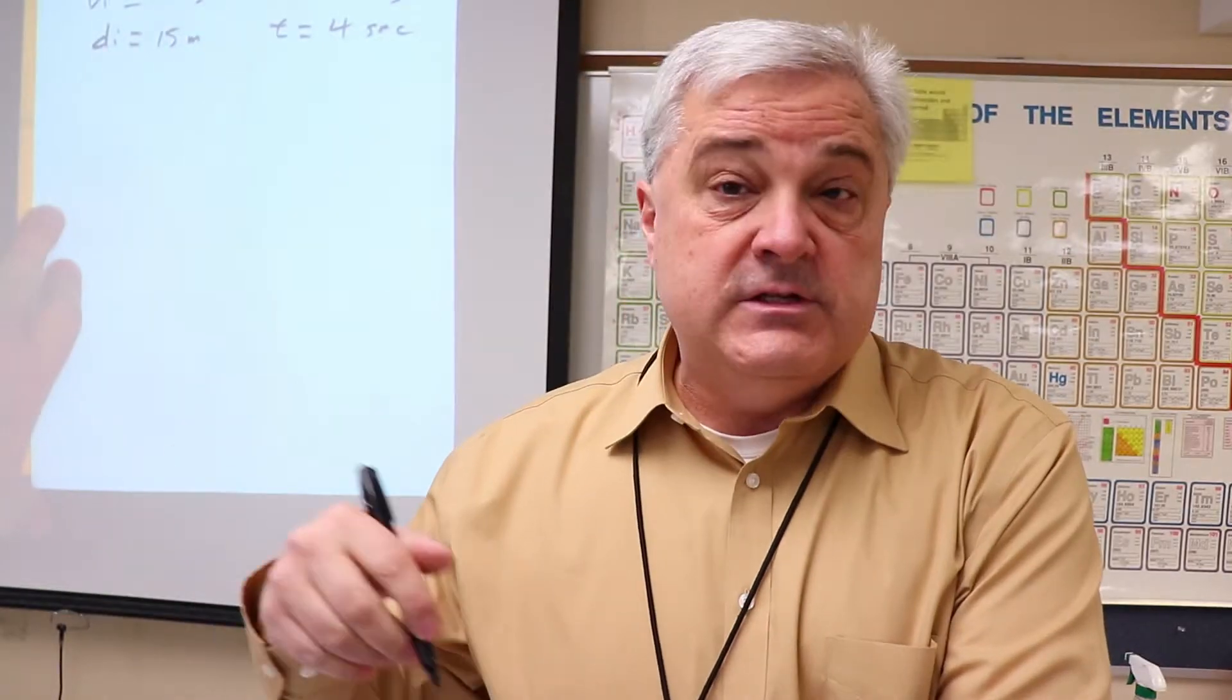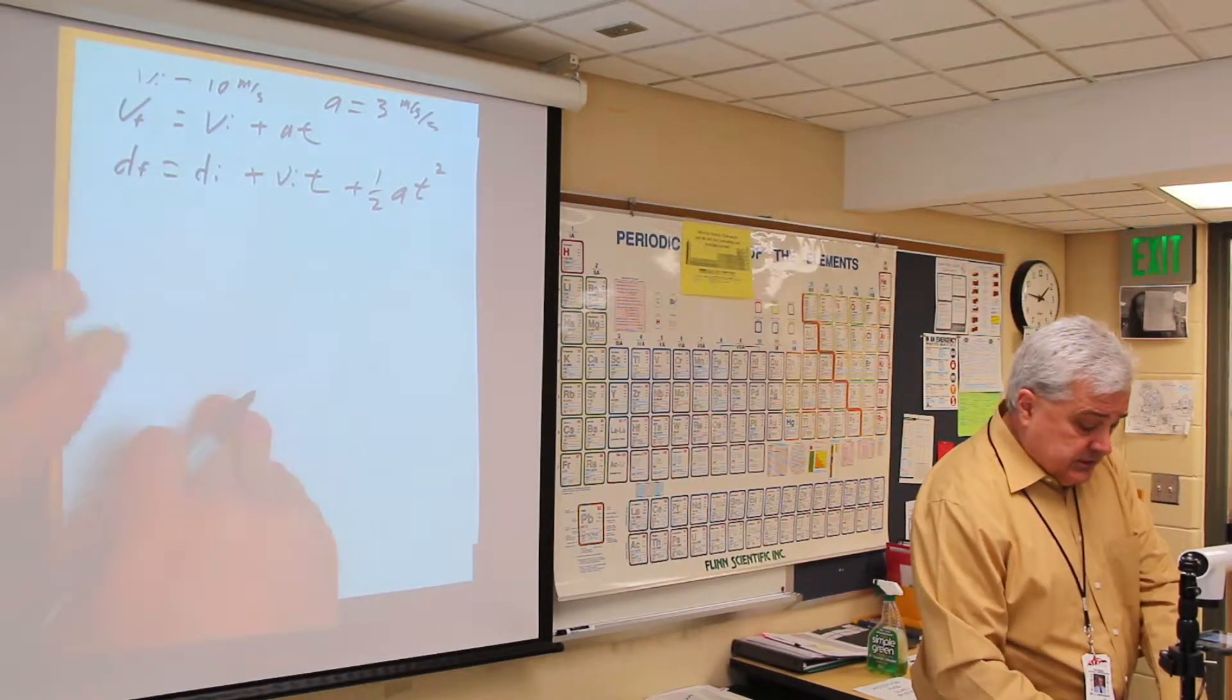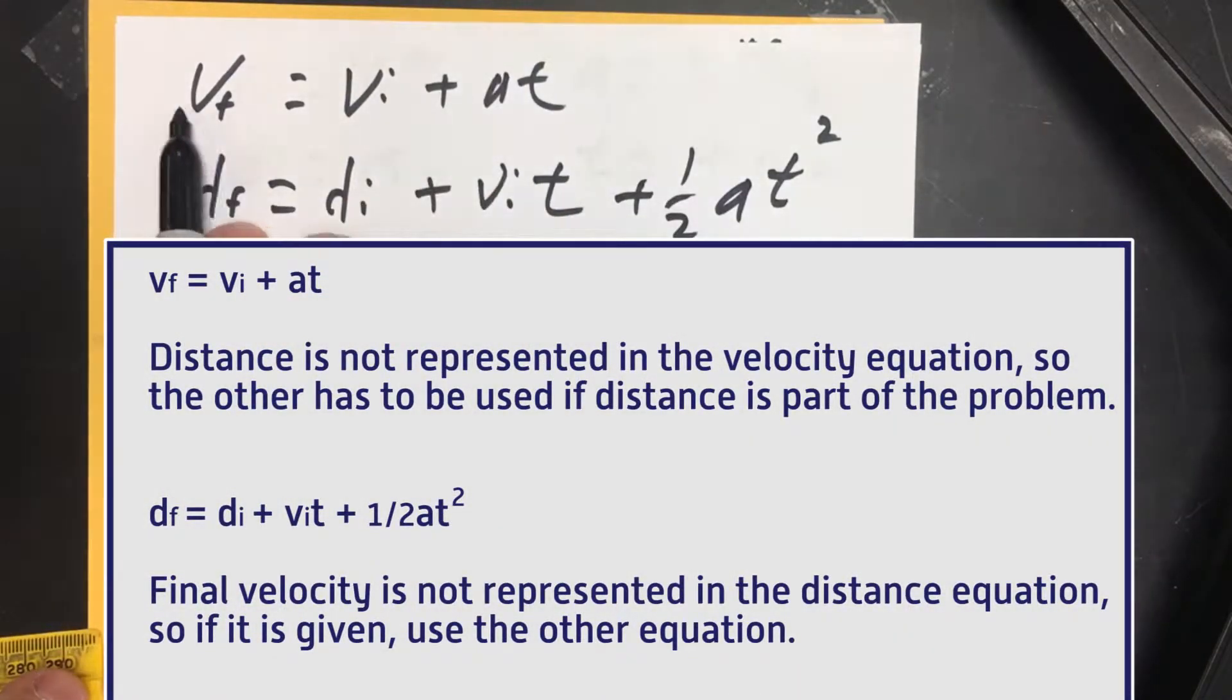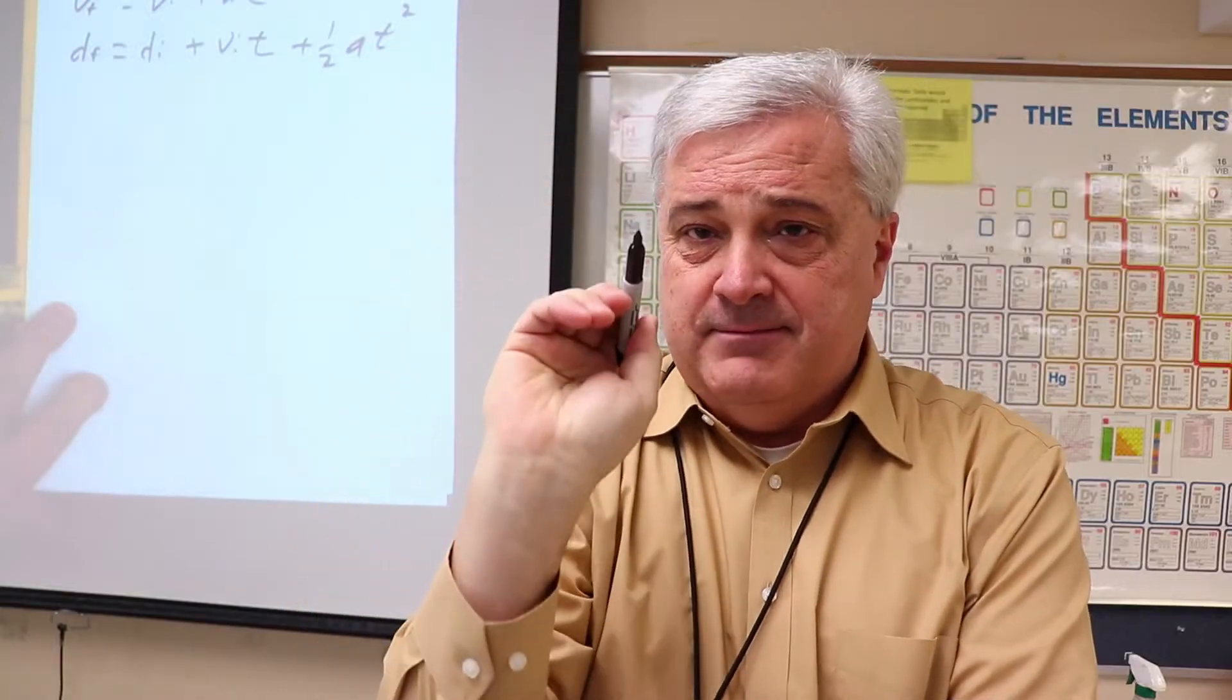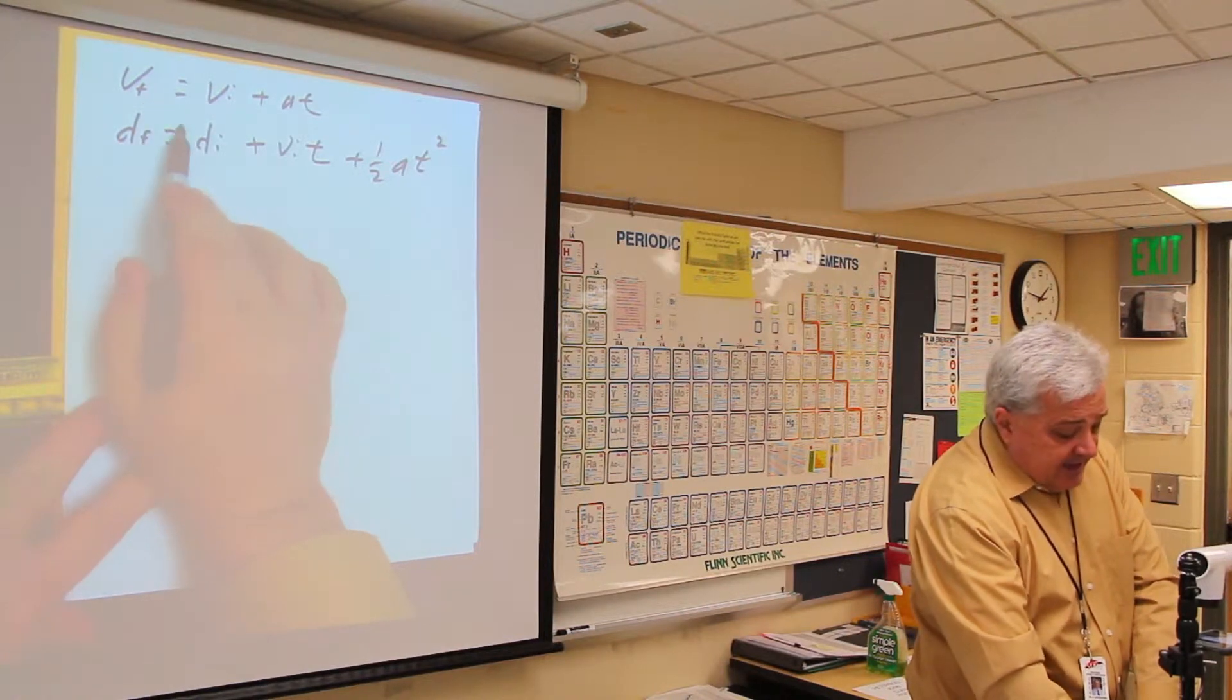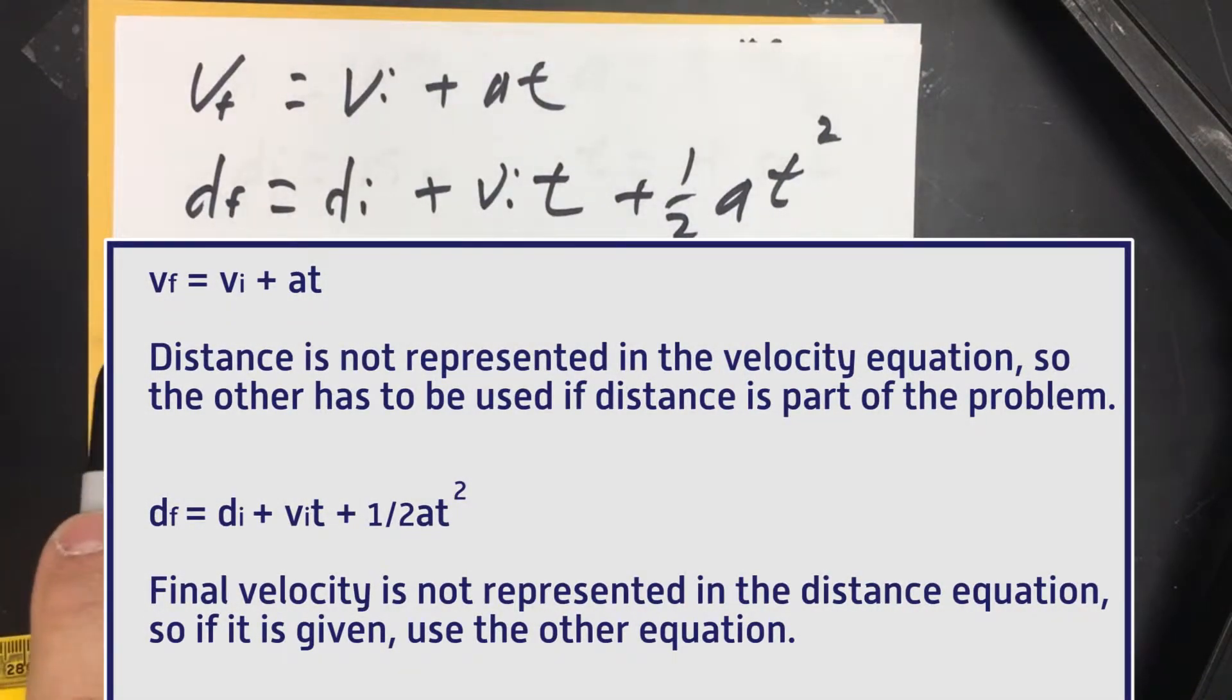In this case it's very simple. We've written down what's given. The question is: what is the final distance, what is the final position? Looking at our two equations, the velocity equation doesn't have distance in it, we cannot use this equation to find distance. Here's the trick: if you don't have final velocity, use this equation. If you do have final velocity, use this equation.